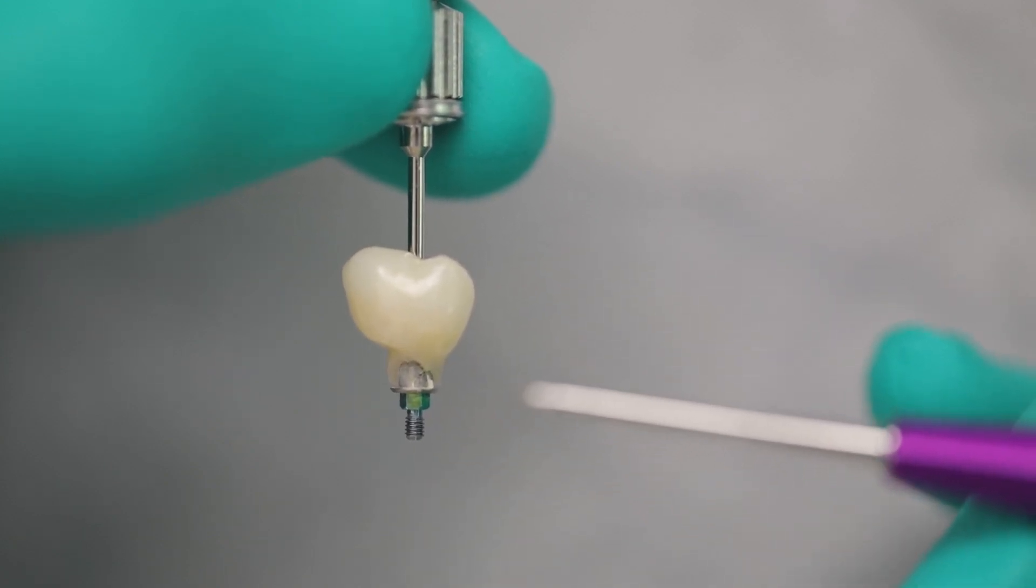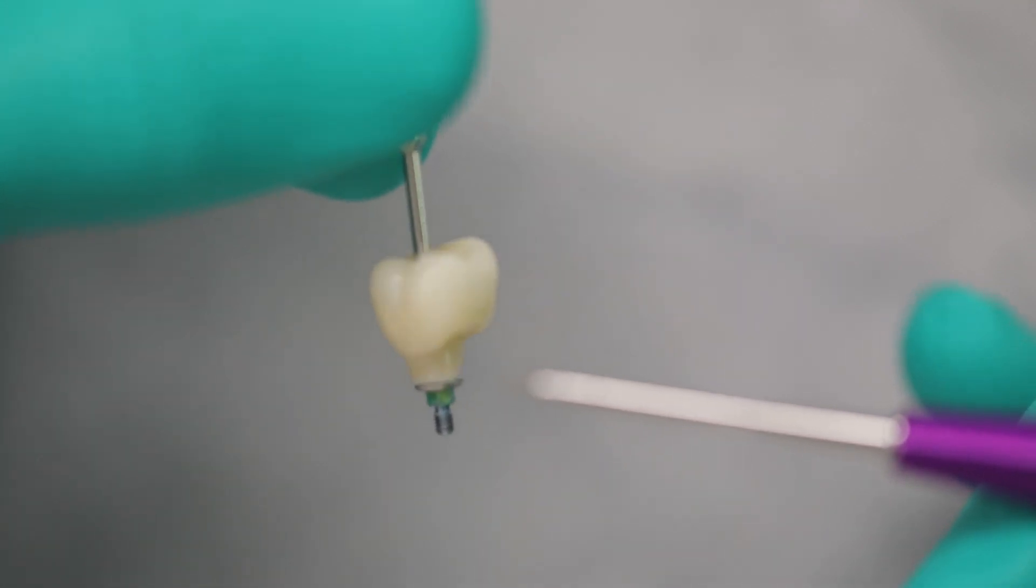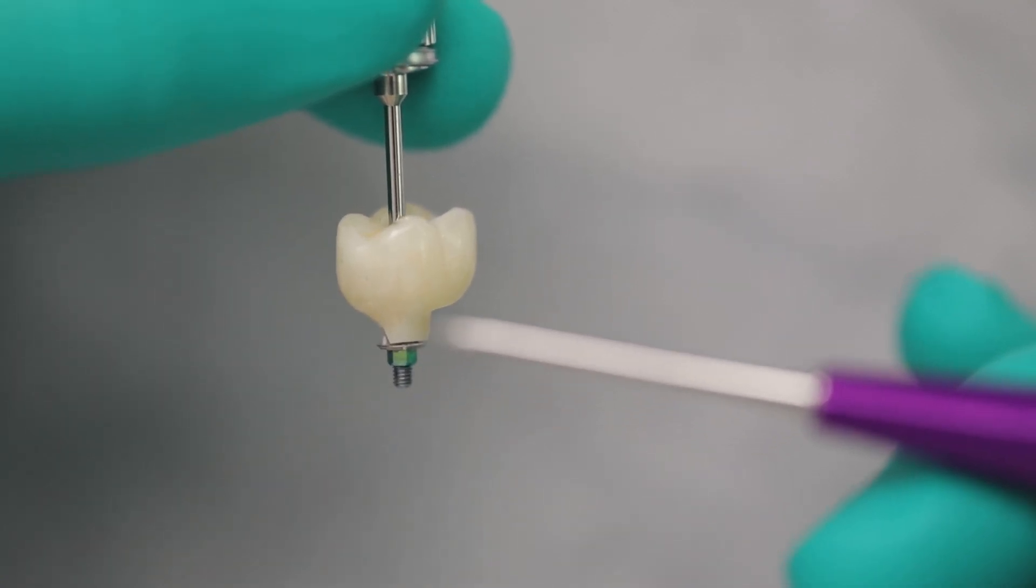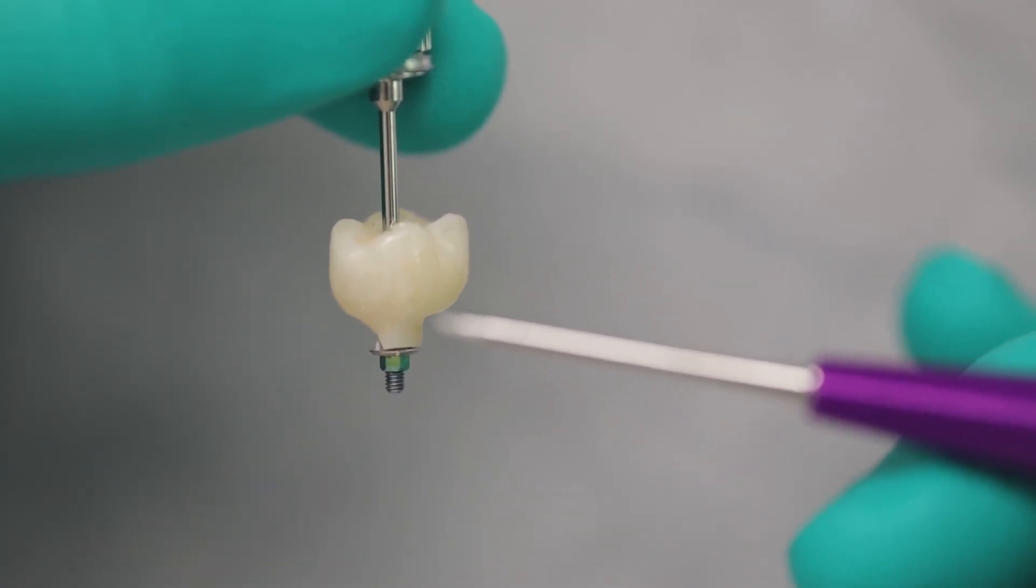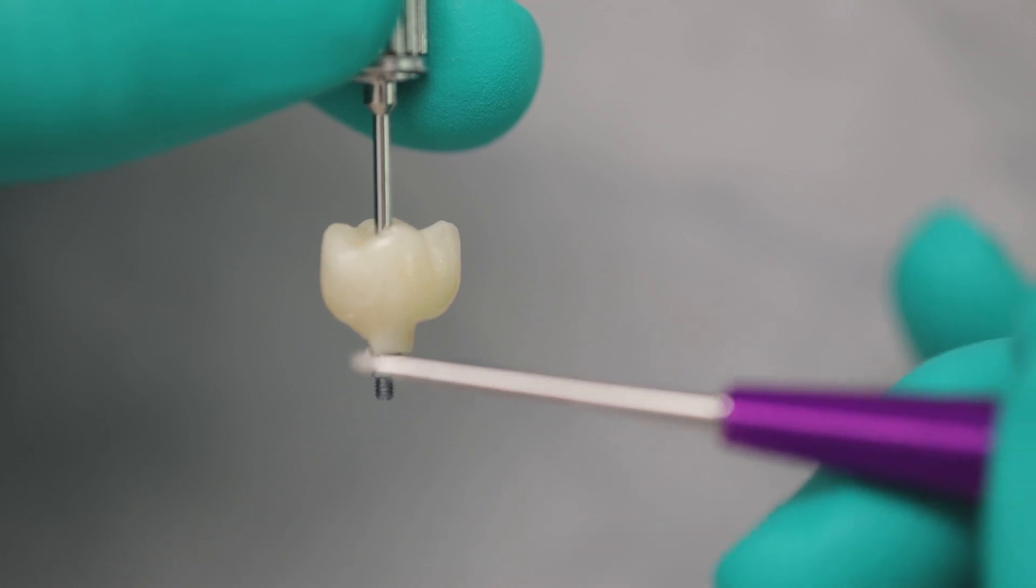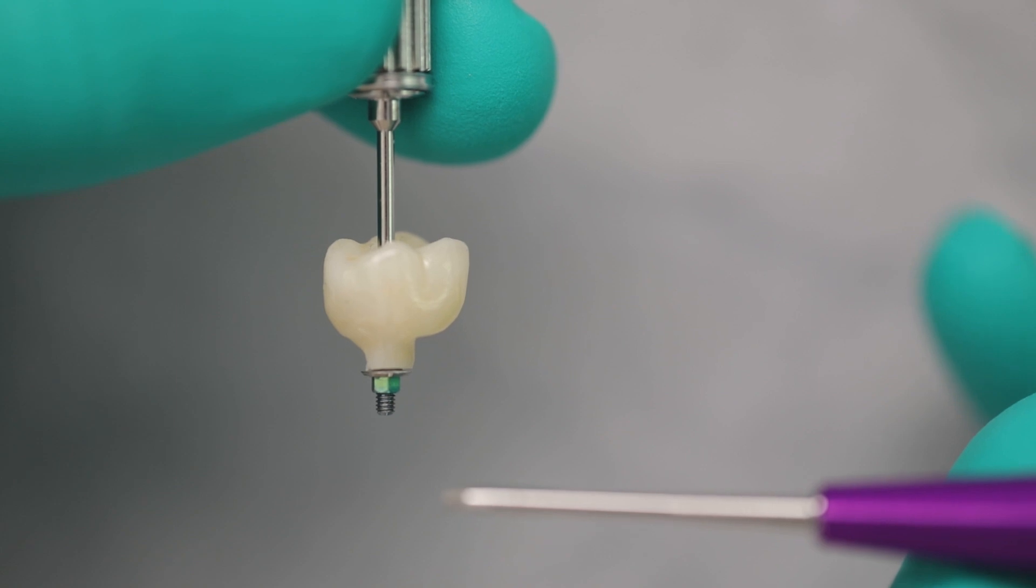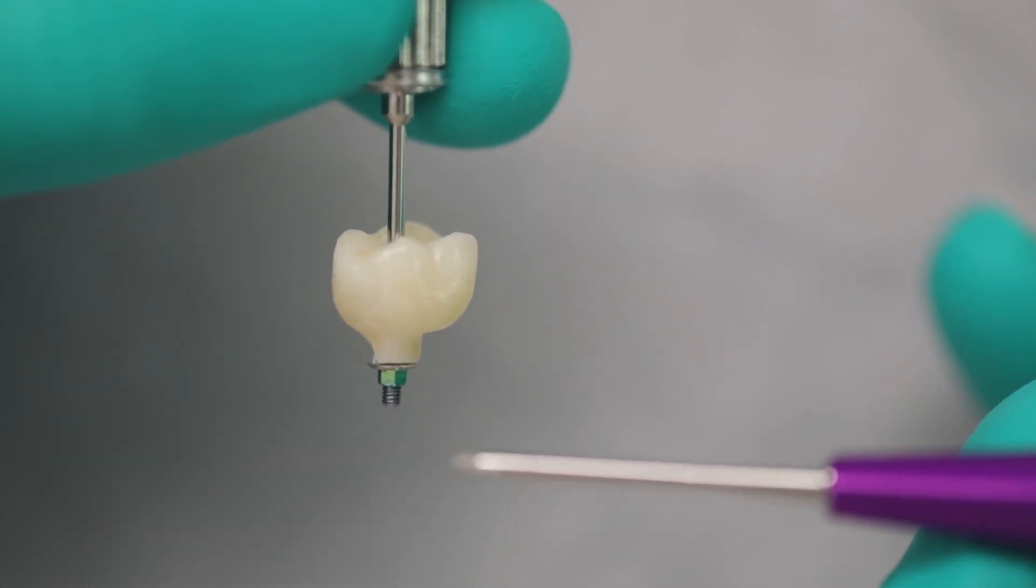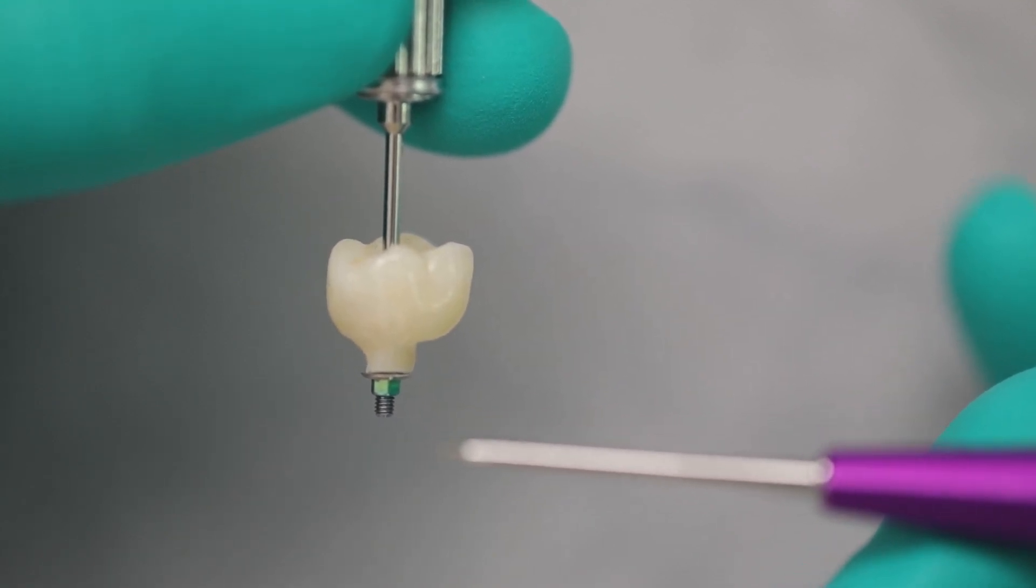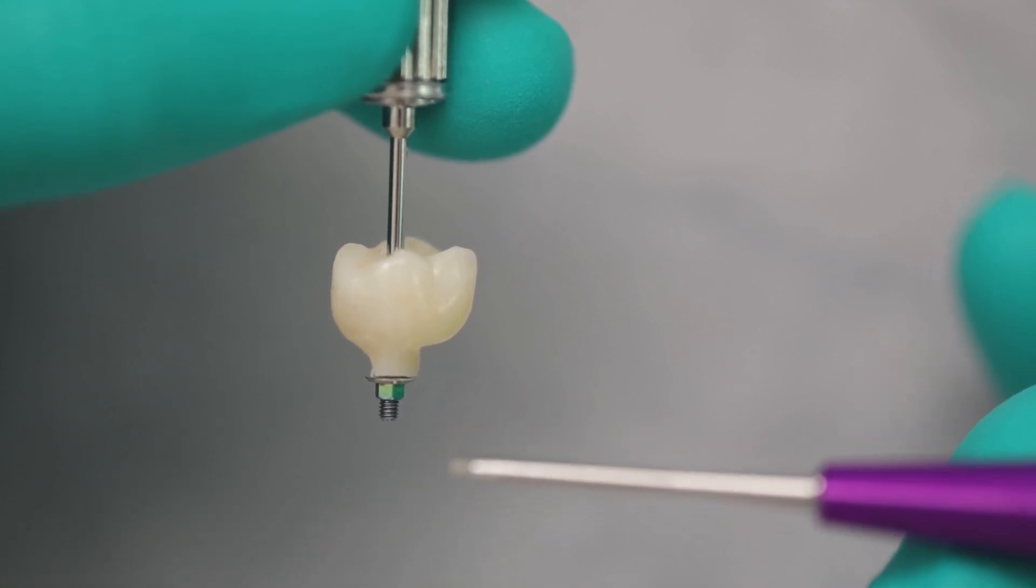Now, when we say Snoopy, we have this cantilever, which is one problem. But the second problem we have here is lab fabrication. So I'm going to turn this over. As I turn this over, I want you to look at it from this side here. From this side here, notice that the emergence profile, so from the neck here down is the same profile as a stock healing abutment.